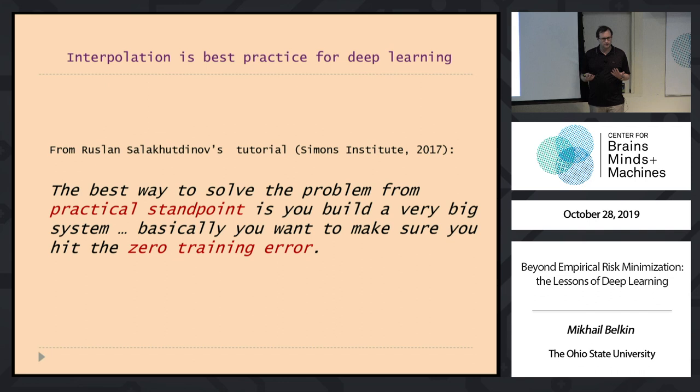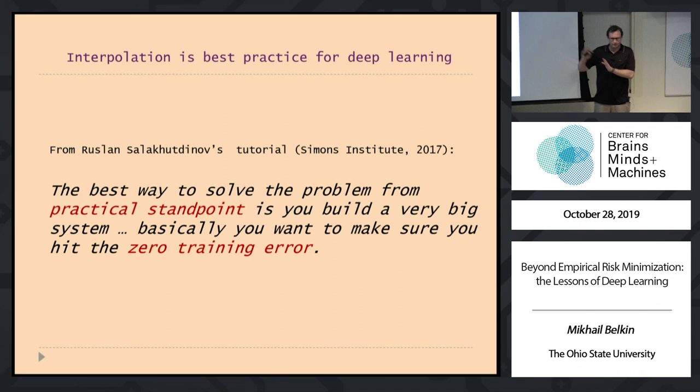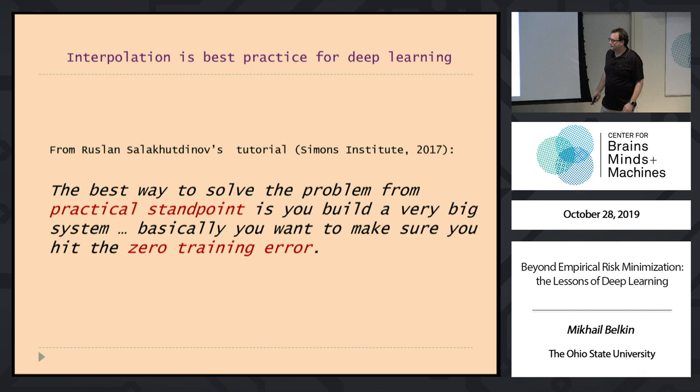Interestingly, the best practice of deep learning is exactly interpolation. As Ruslan's tutorial says: start by making the network big enough to get zero training error. You may tune parameters afterward, but getting zero training error is already pretty good. The whole practice of deep learning is essentially that. And we see that classical theoretical analysis just doesn't apply — it gives trivial results.